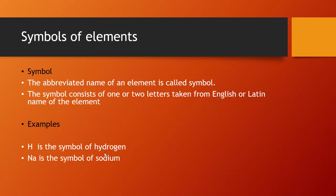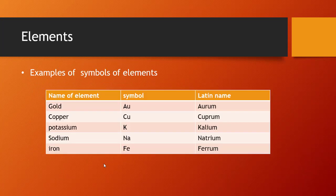For example, H is the symbol of hydrogen. As you know that hydrogen is an element and is found in the form of a gas. The next one, Na is the symbol of sodium, which is an element. Let's see some more examples of symbols of elements.